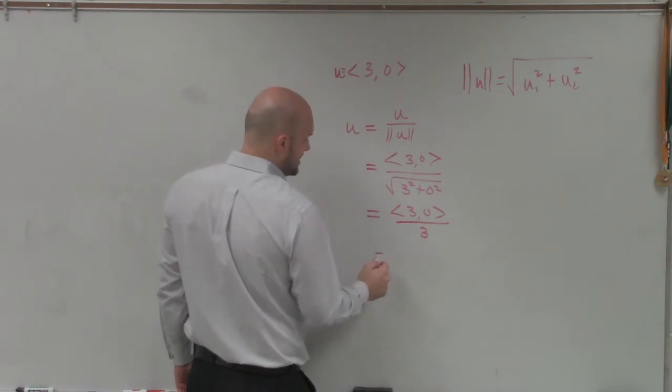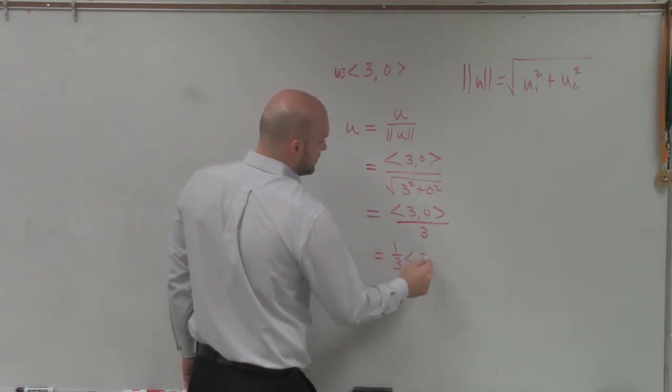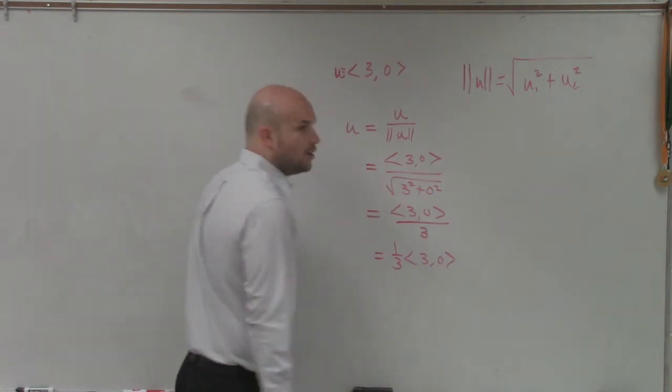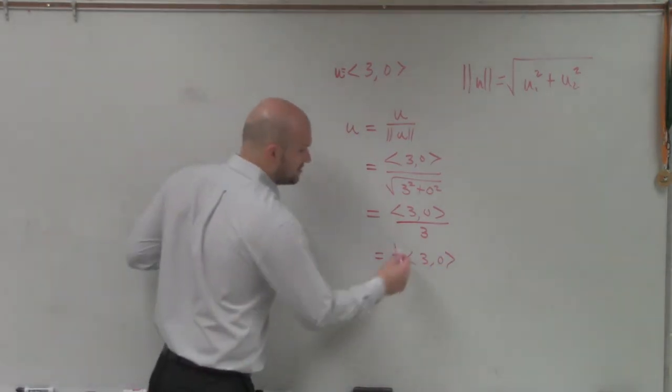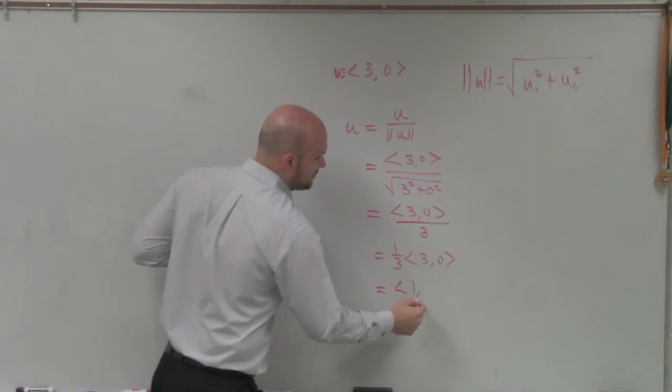So therefore, I can rewrite this as 1 third times 3 comma 0. Or the preferred method for this class, for me, is going to be to distribute that. So we're left with 1 comma 0.